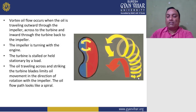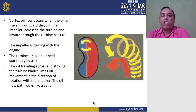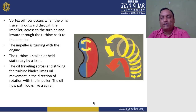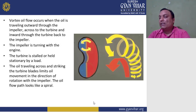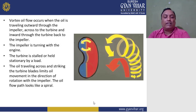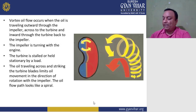The vortex flow occurs when oil travels outward through the impeller, across to the turbine, and inward through the turbine back to the impeller. The impeller is turning with the engine and the turbine is held stationary by a load. Oil strikes the turbine blades, which limits oil movement in the direction of rotation, and the oil flow path looks like a spiral.